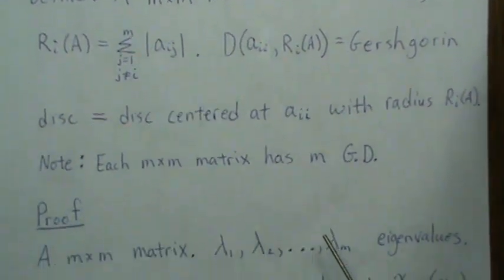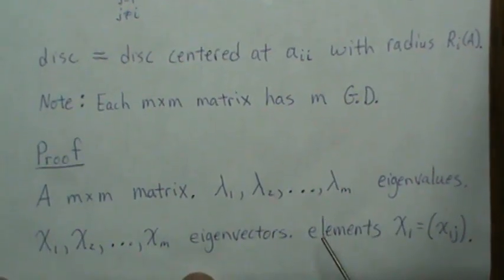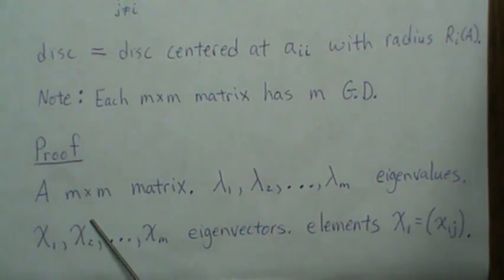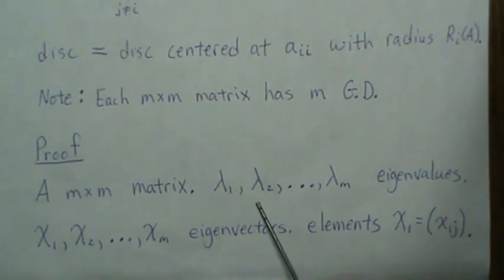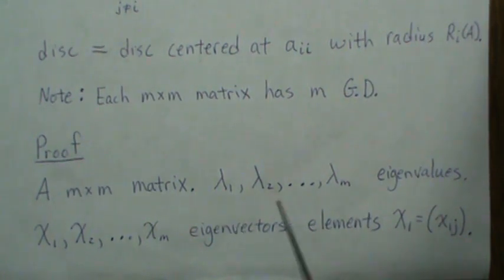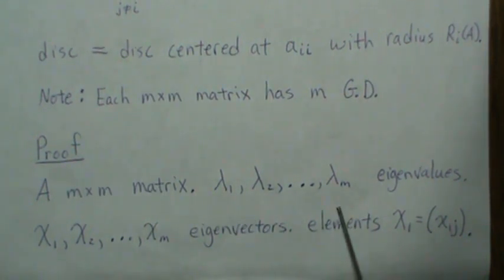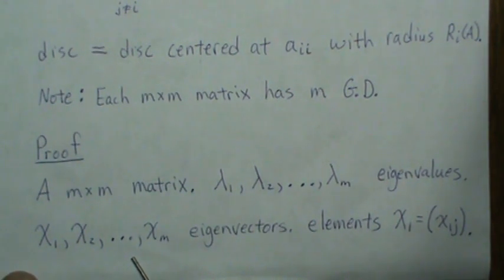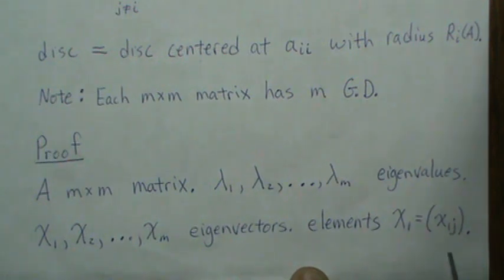Okay, and the proof is also straightforward and simple. If we have A as an m by m matrix, the eigenvalues not necessarily ordered, just the eigenvalues, but the associated eigenvectors, and each eigenvector we're going to denote like this: for example the i-th eigenvector will be little x_ij, and then j of course goes from one to m.